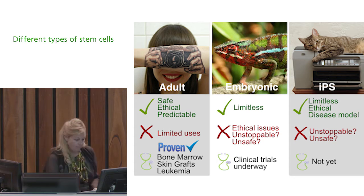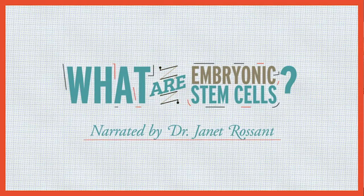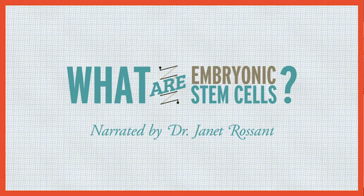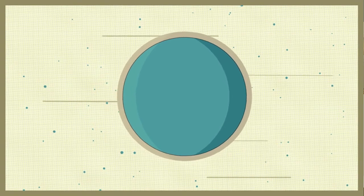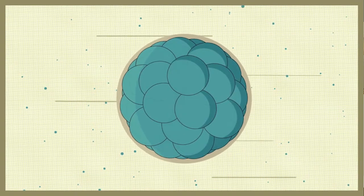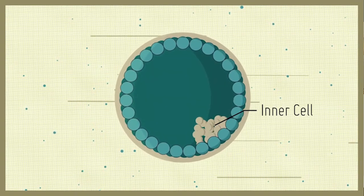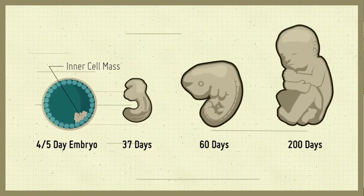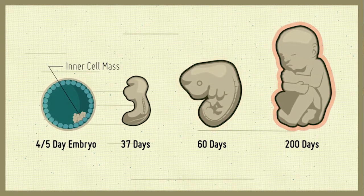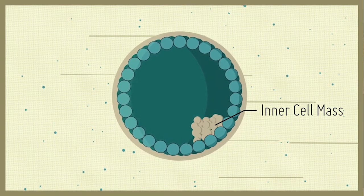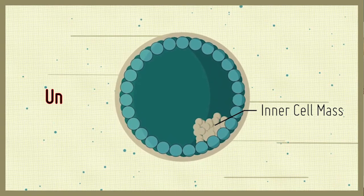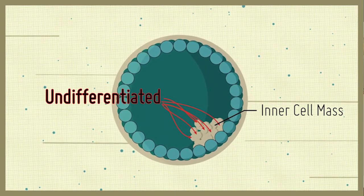Let's have a look at a little video so you can see what they are. Following fertilization, the developing embryo contains a group of cells known as the inner cell mass that will eventually go on to form all tissues of the body. However, at this early stage of development these cells have not yet committed to become a specific type of cell and are said to be in an undifferentiated state.